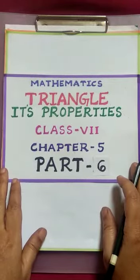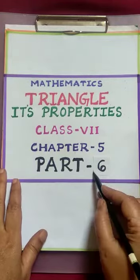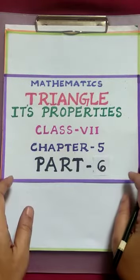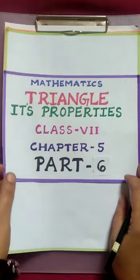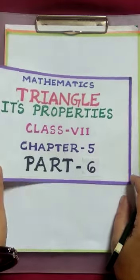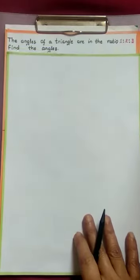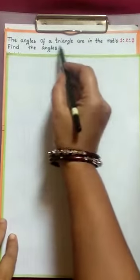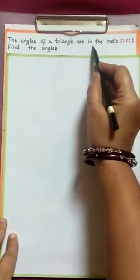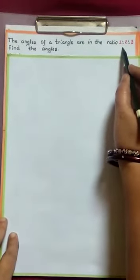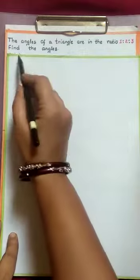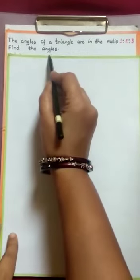Students, welcome back to part 6 from chapter 5. Today we solve some more sums from exercise 3. See the first problem: the angles of a triangle are in the ratio 1 is to 2 is to 3. Find the angles.